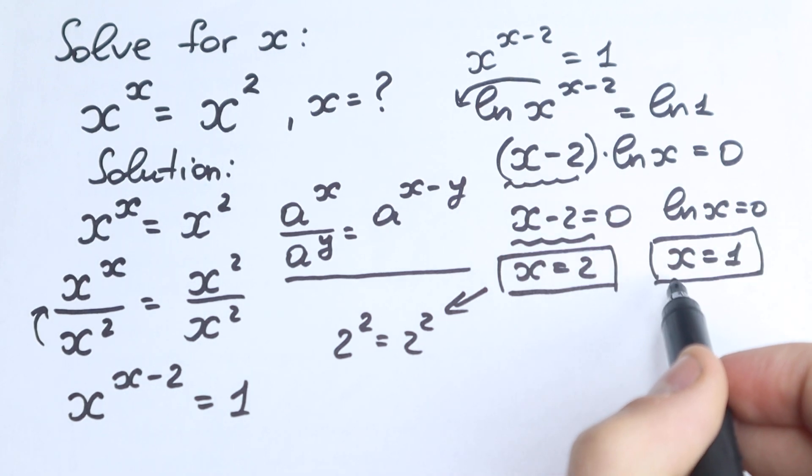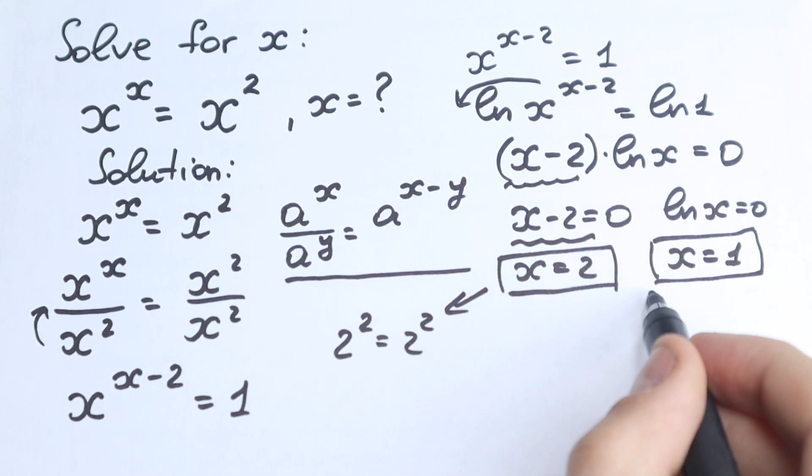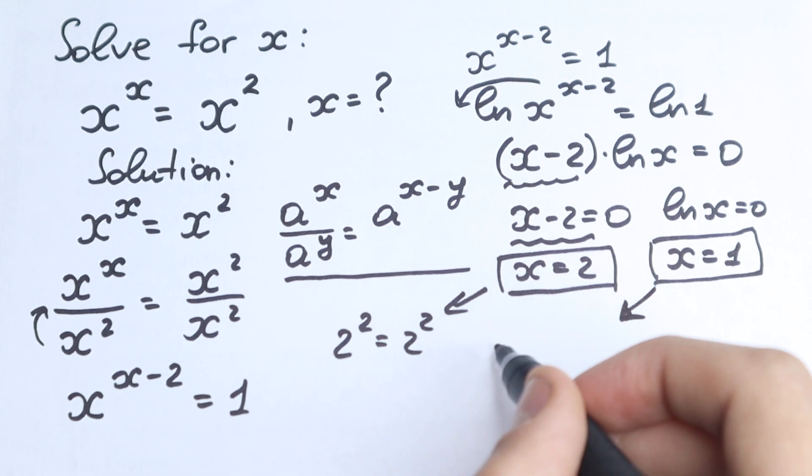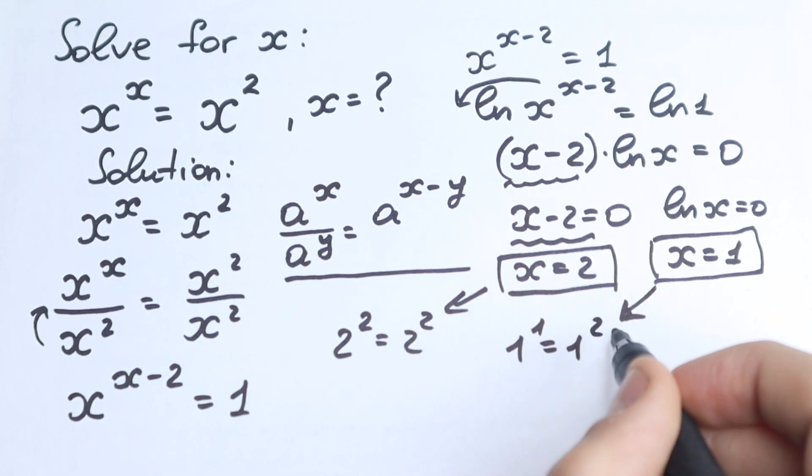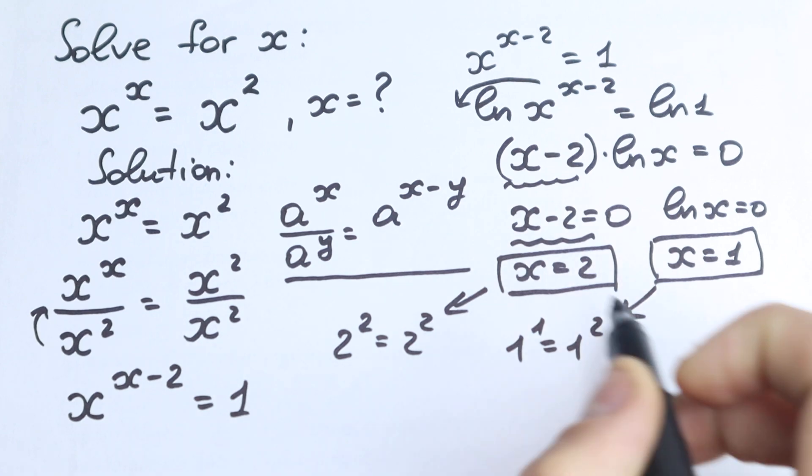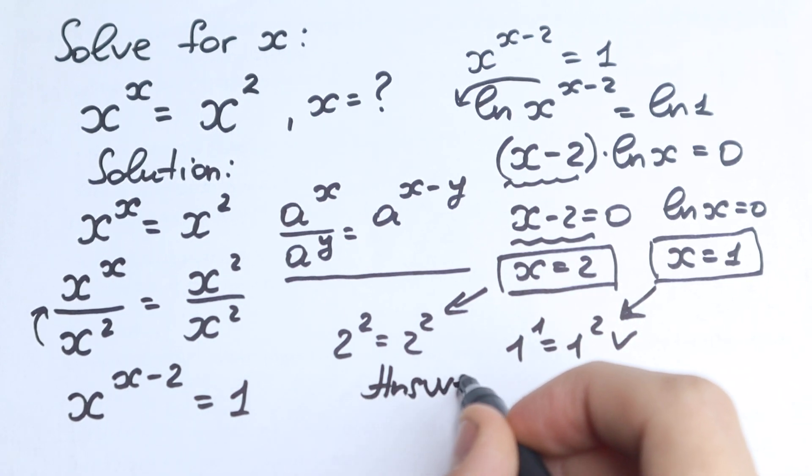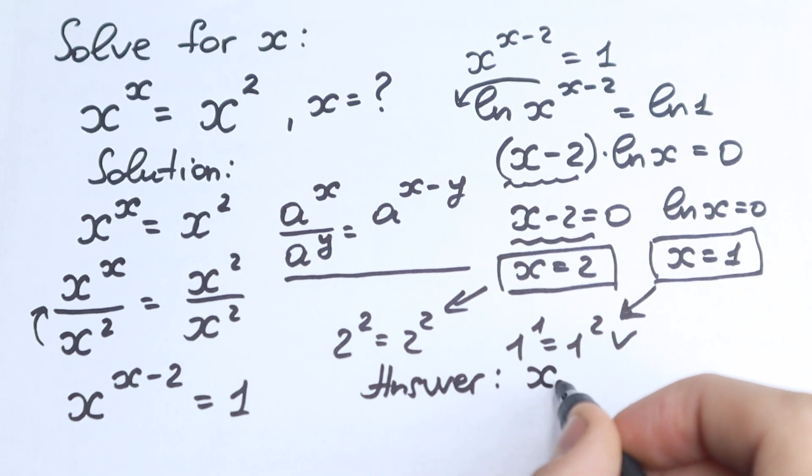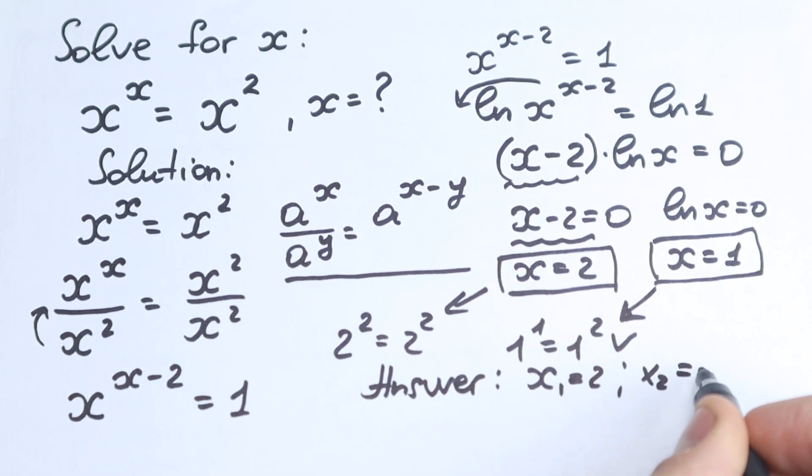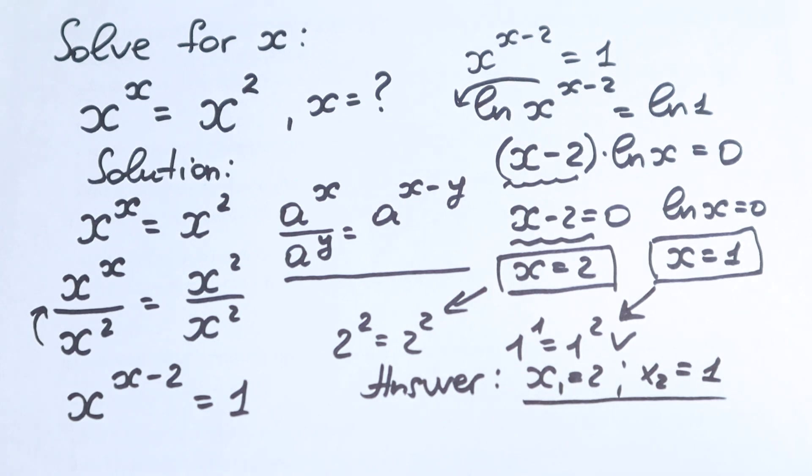But if you look closely, 1 is a correct answer as well. So we have 1 to the power 1 equal to 1 square, which is absolutely correct. So we have 2 answers, our first answer x first equal to 2, x first equal to 2, and x second equal to 1, which is really great.